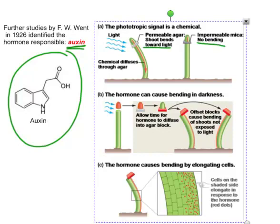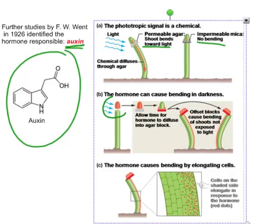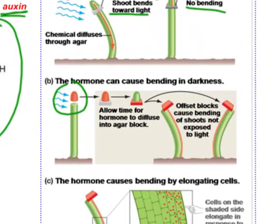If the barrier is impermeable, it won't bend. He also did some interesting things where he took a tip and exposed it to light so it would build up the chemical — shown here in red — and then he placed that tip onto a little block of agar and allowed that hormone to diffuse, so the block of agar becomes filled with the hormone.